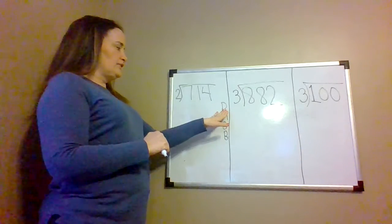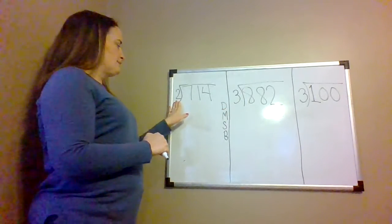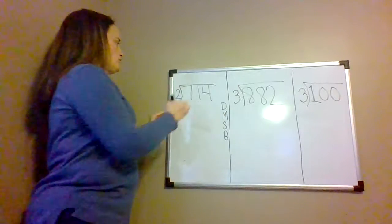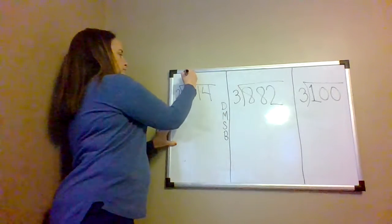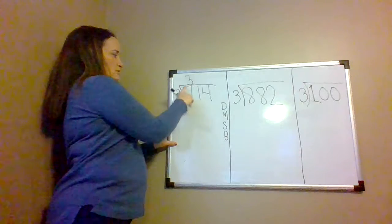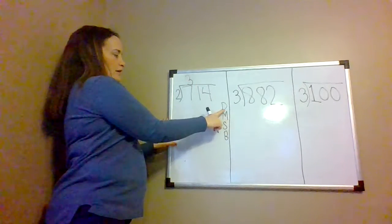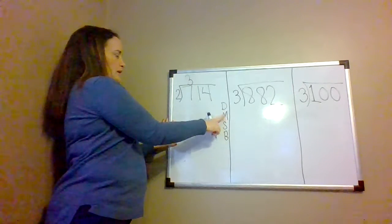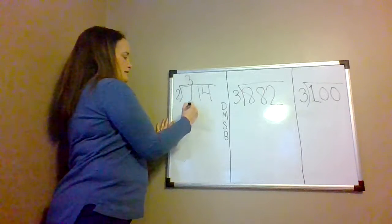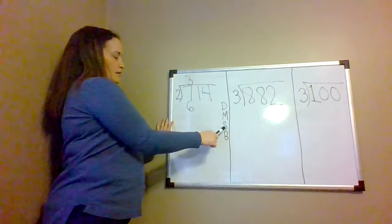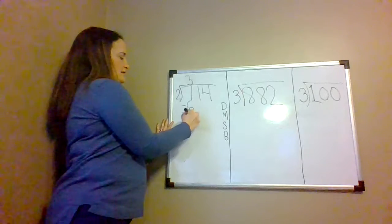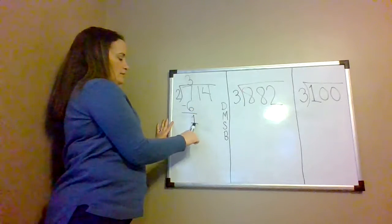First we're going to divide the hundreds place by 2. There are 7 hundreds divided by 2. 7 divided by 2 is 3. Then we multiply: 3 times 2 is 6. Then we subtract: 7 take away 6 equals 1.